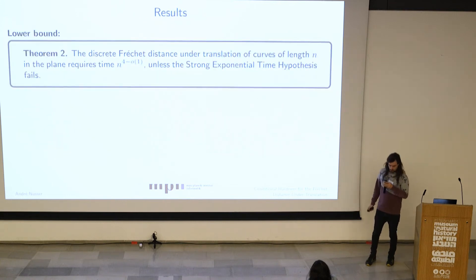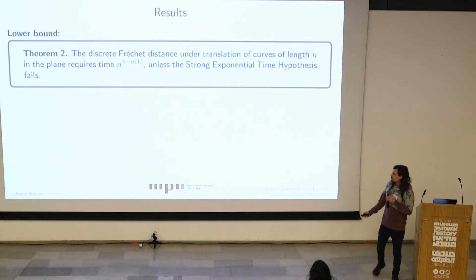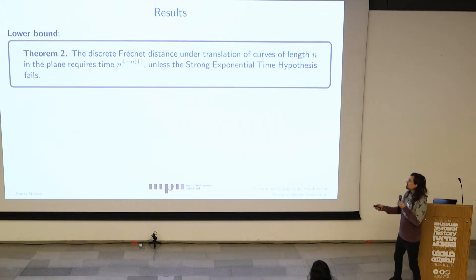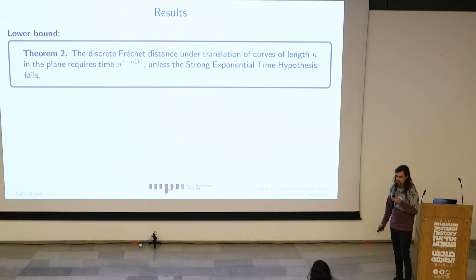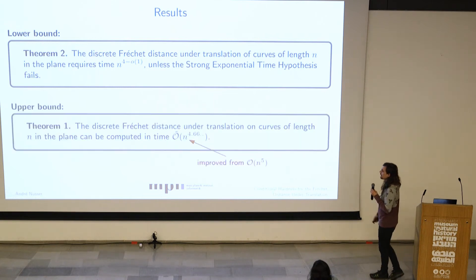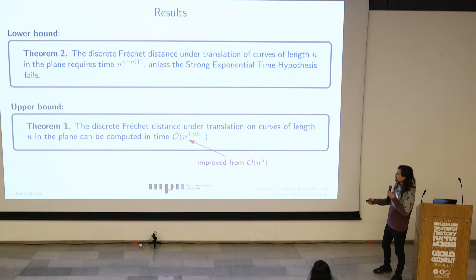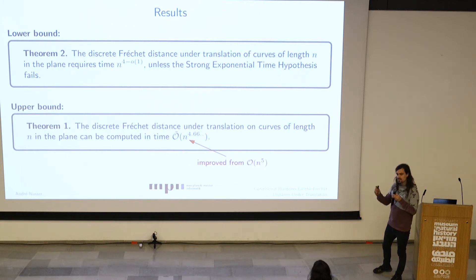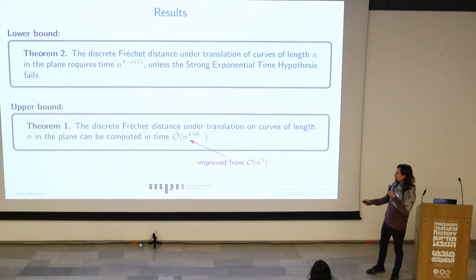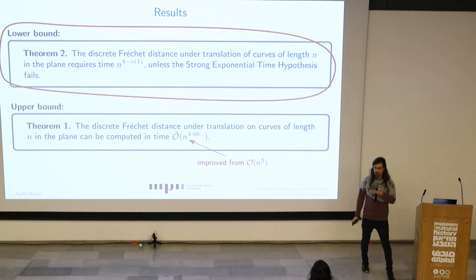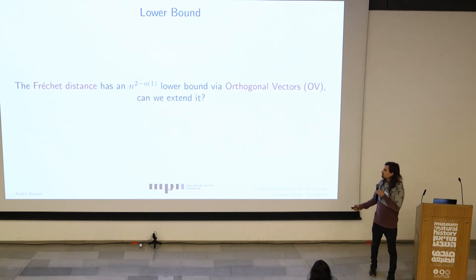Now the two results we had in this paper. First, we have a theorem: the discrete Fréchet distance under translation of curves of length n in the plane requires time n^(4 − o(1)), unless the strong exponential time hypothesis fails. So we have an n^4 lower bound. In the same work, we actually showed there is an algorithm running in time Õ(n^4.666), so there is still a gap remaining to be closed. This improved on the previous O(n^5) algorithm. I will focus on the lower bound, since we are in a fine-grained complexity workshop.